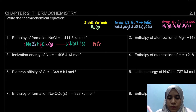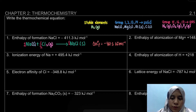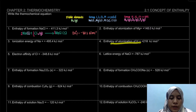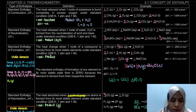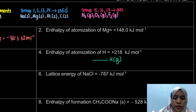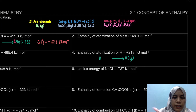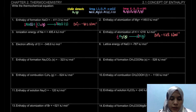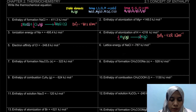Write down the thermochemical equation and include the ΔH value. That is example one. Examples two and three you can try yourself. Example three is the enthalpy of atomization of H — when one mole of gaseous atom is formed from its stable element. The product is H(g) and the stable element is H₂(g), so: ½H₂(g) → H(g).